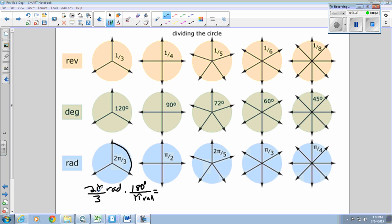180 degrees over pi radians is the conversion rate. We cancel those out and multiply it through. 200 times 180 divided by 3 is 120 degrees. Again, those cancel out. Our conversion works.